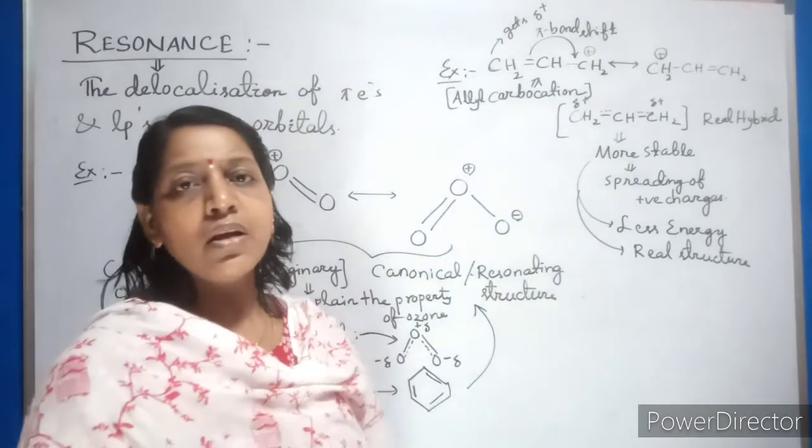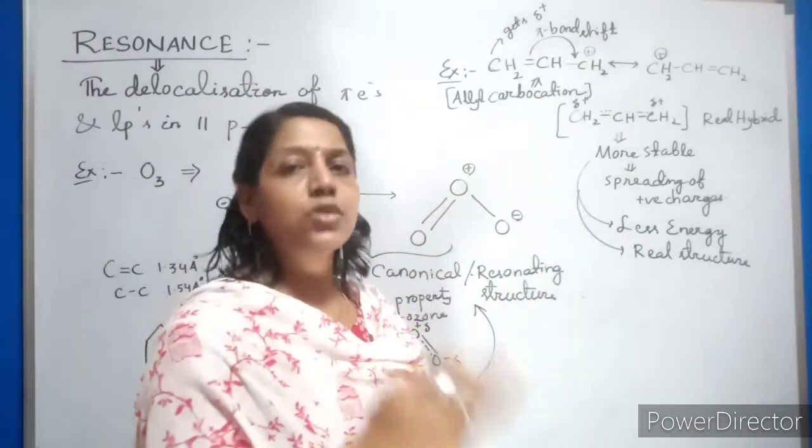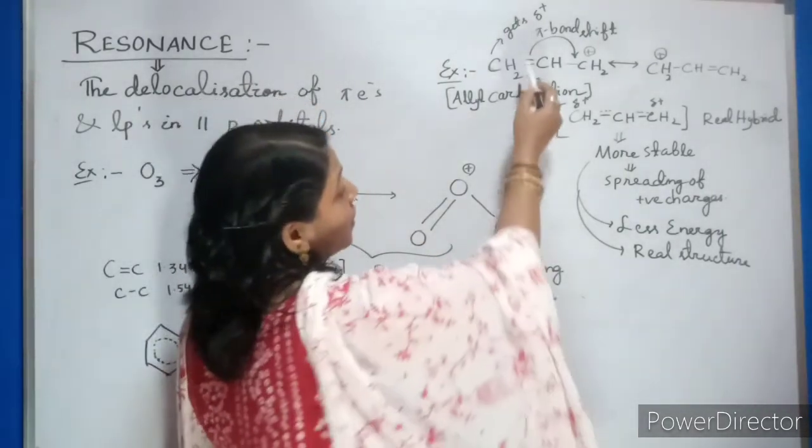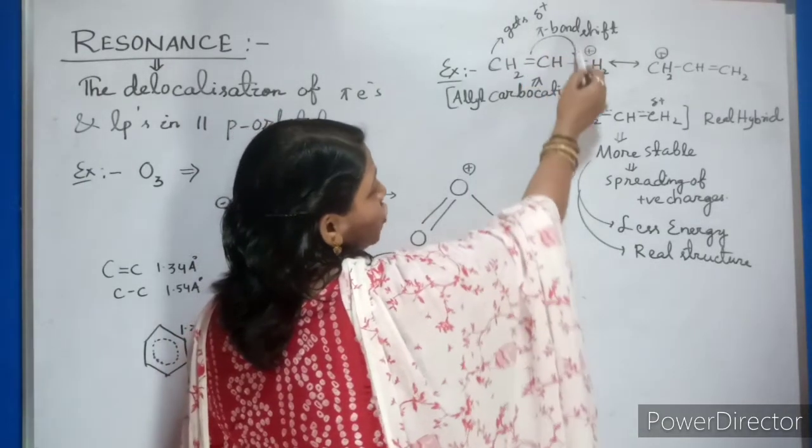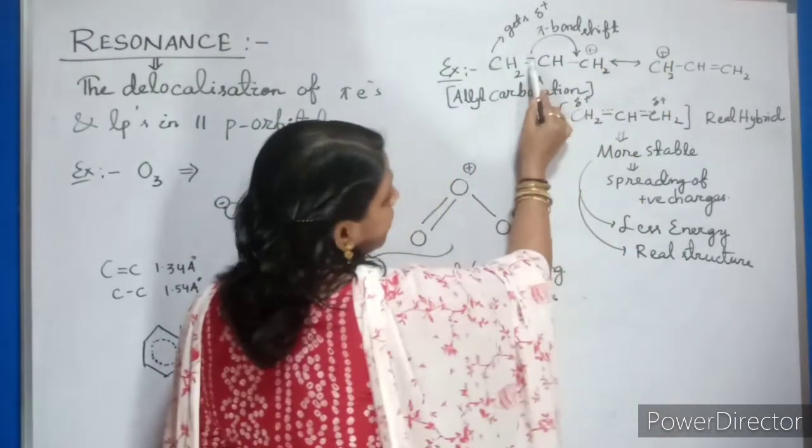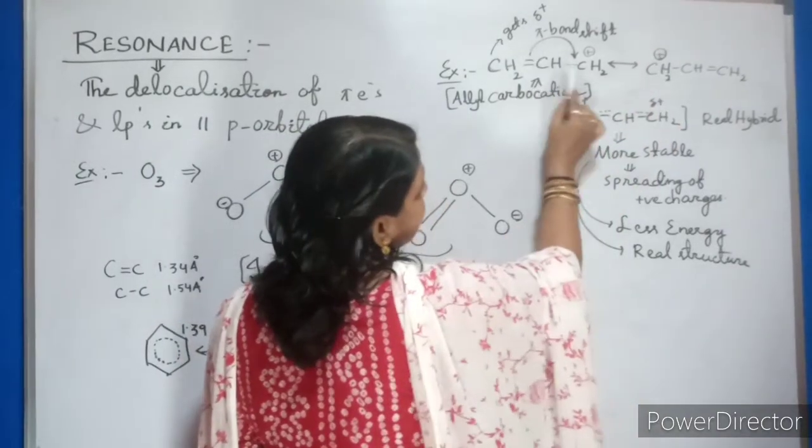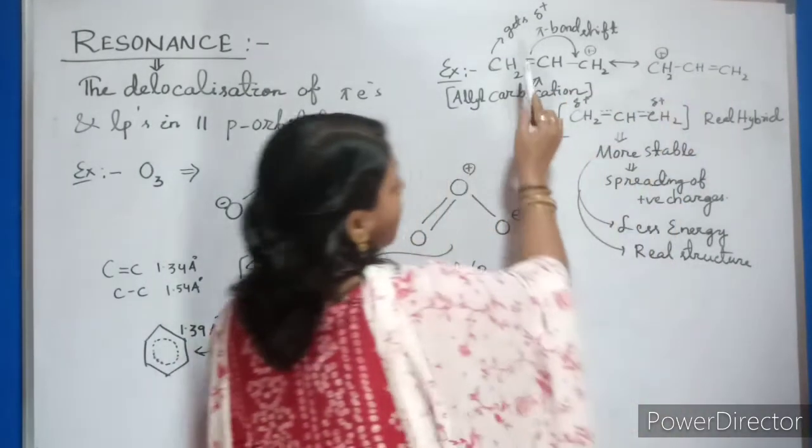Delocalization means your bonds will break and electrons will move from that. Here the first pi bond break. When your pi bond break, then this bond shift here. Now this double bond turn to single bond and this single bond turn to double bond.